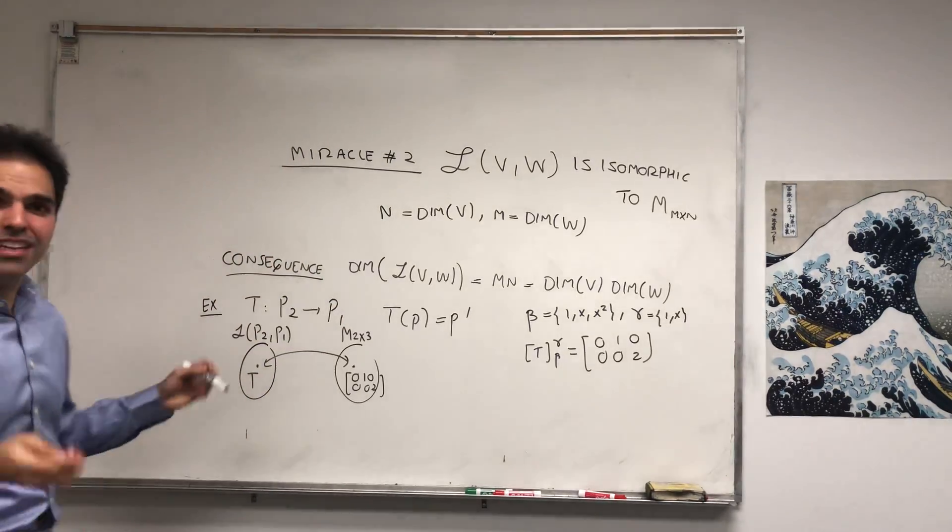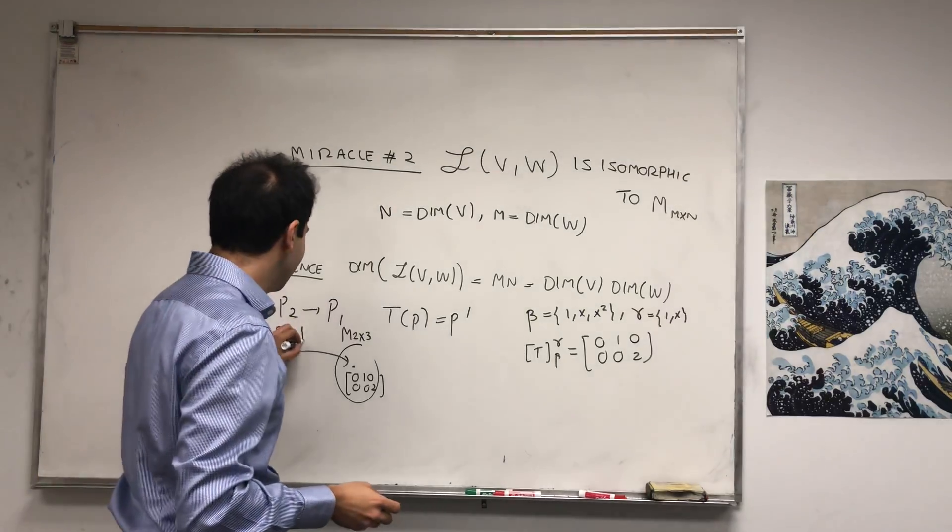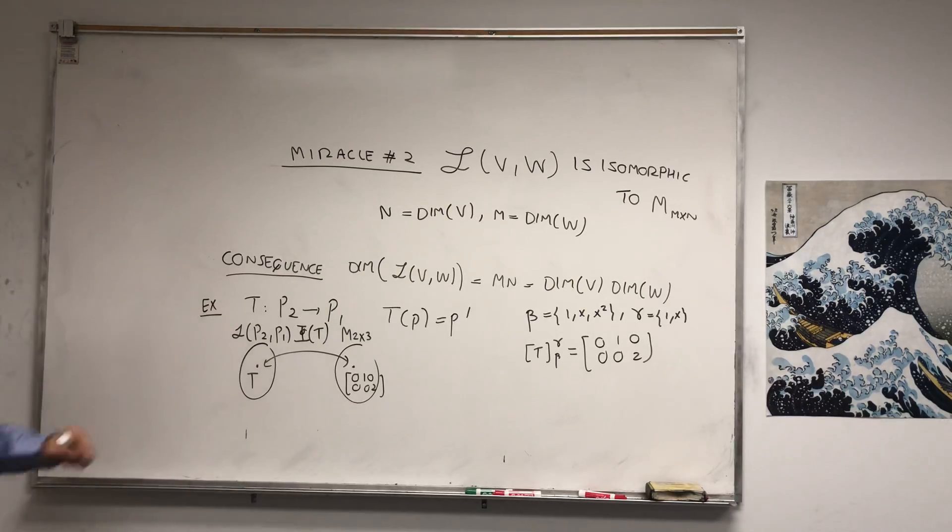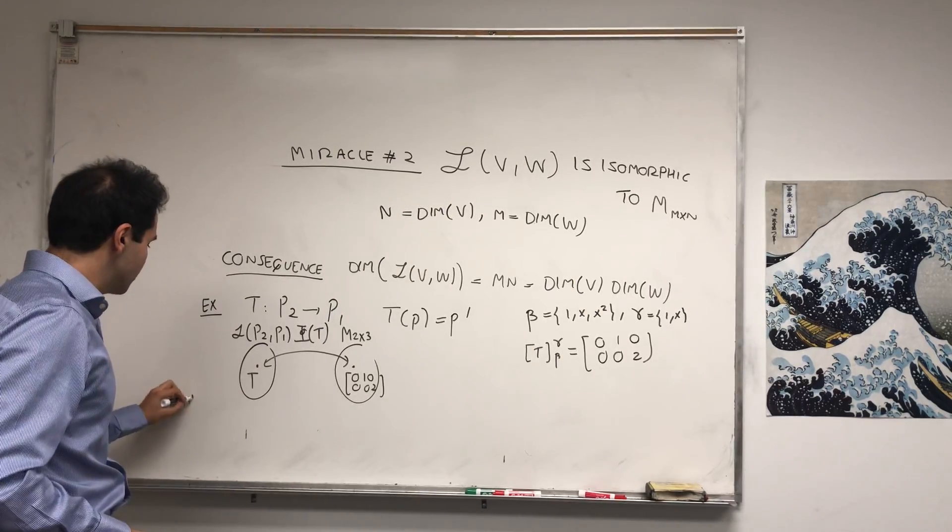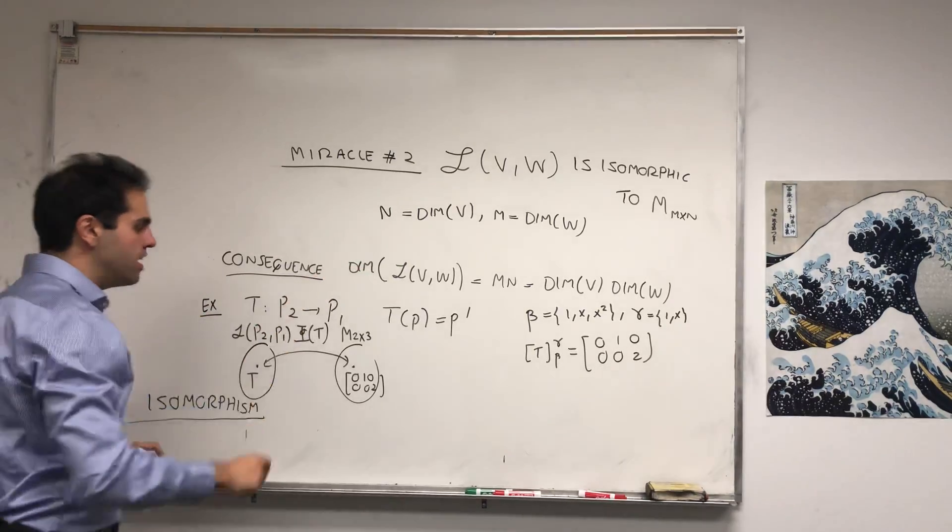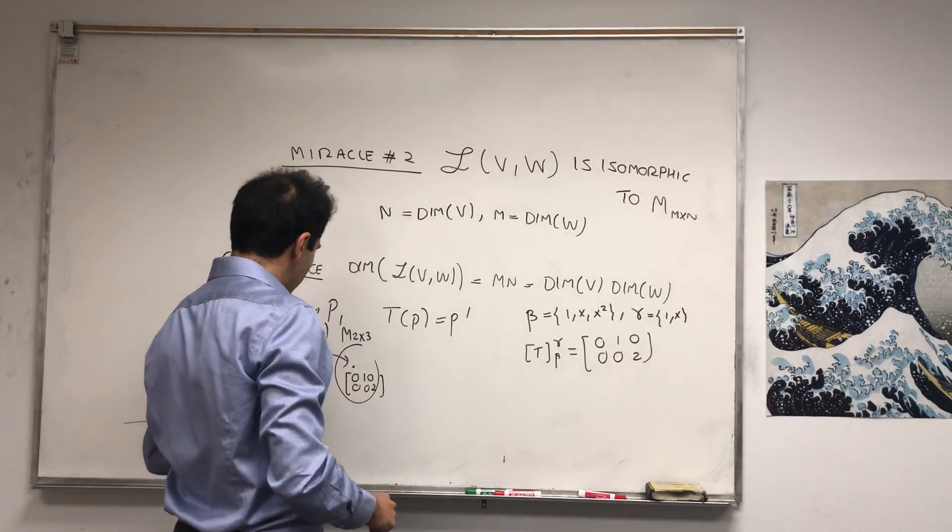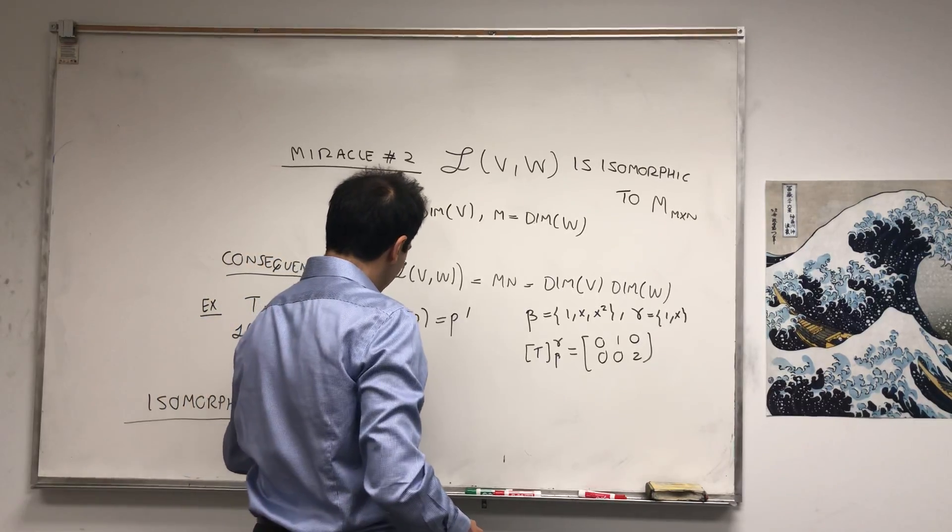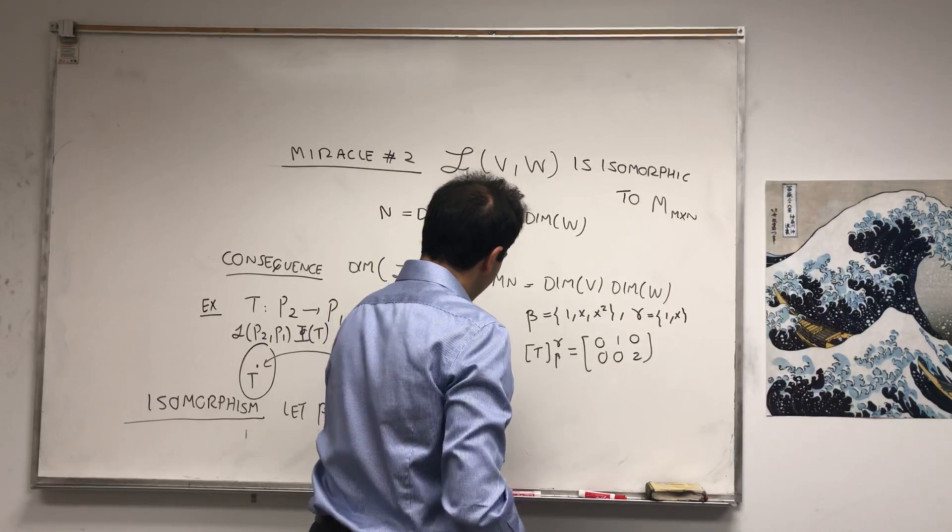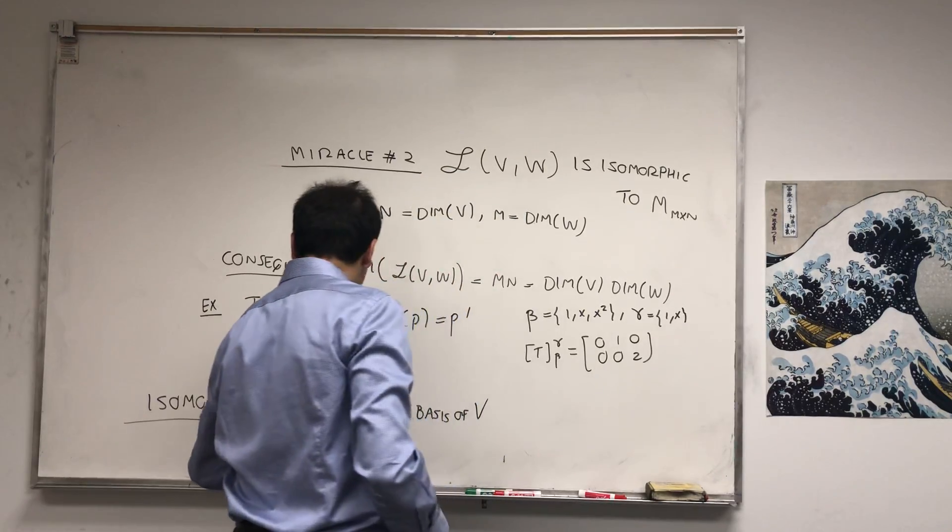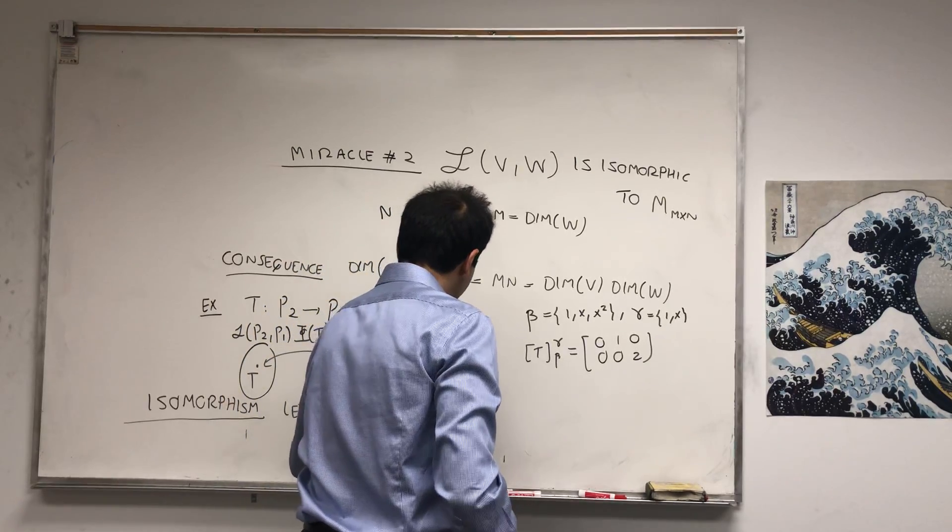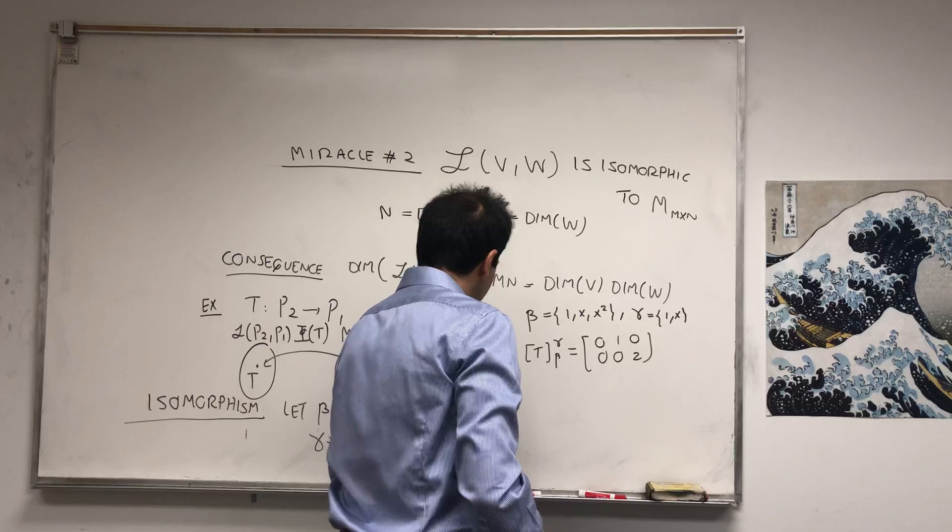And this going back and forth, this isomorphism, is what's called capital Phi. So if little phi was Phoebe, capital Phi is Regina Falange. So here's the isomorphism. So let beta be a basis of V, V1 up to Vn, basis of V, and gamma be a basis of W, W1 up to Wm, basis of W.